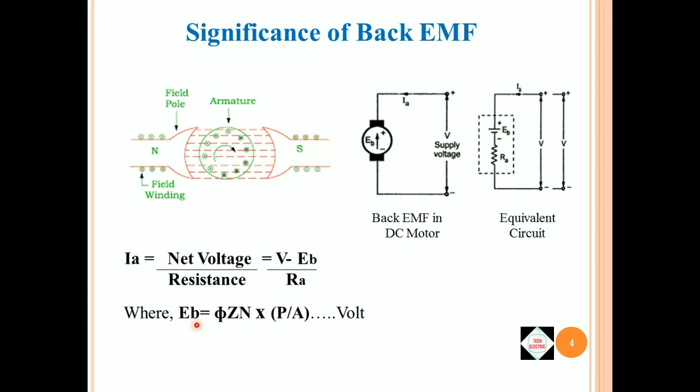In this equation, Eb equals to φZN into P upon A, where Eb is the back EMF, φ is the magnetic flux, Z is number of conductors, N is speed in RPS, P is number of poles and A is number of parallel paths. But, as you can see in this equation, Eb is directly proportional to N.